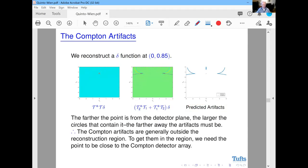The farther the points from the detector plane, the larger the circles contain it, and so the farther away the artifact. Because if the point's down here, the circles are here. And so the bigger the radius of the circles, the bigger the radius of the other circles, so they'll be farther away. In other words, points that are down here, the artifacts can be out of the reconstruction, as we showed.